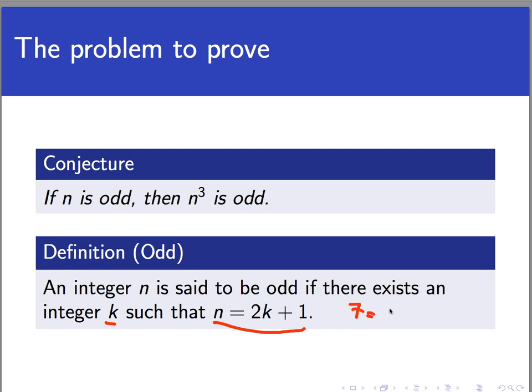For example, 7 is odd because I can find another integer, namely the integer 3, such that 7 is equal to 2 times 3 plus 1. So we're clear on the terms. Now we're going to set up a no-show table and attempt to prove this conditional statement.